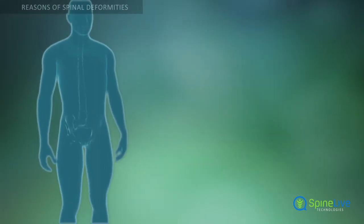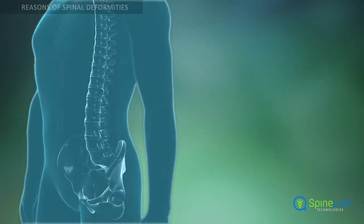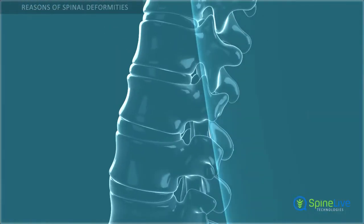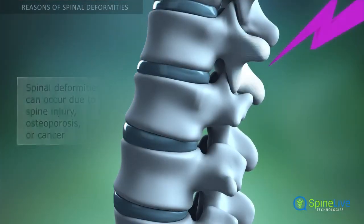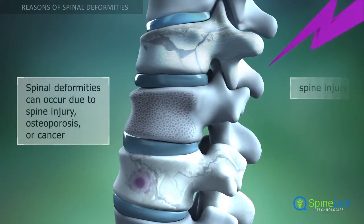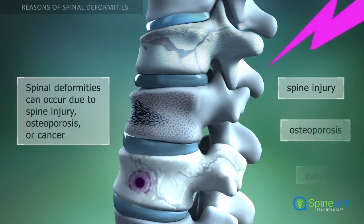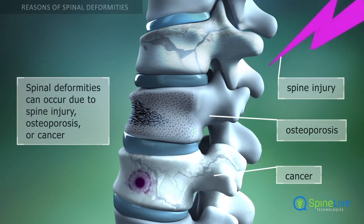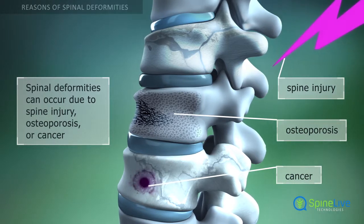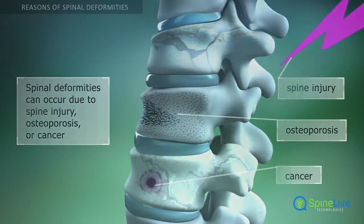One of the main causes of spinal deformities are compression fractures of the vertebrae. These can occur due to spinal injuries, osteoporosis, or cancer in the vertebral body.